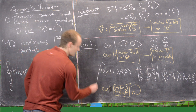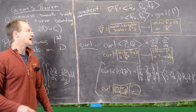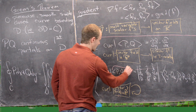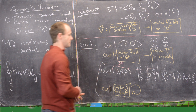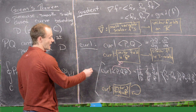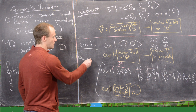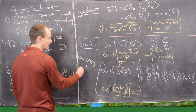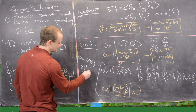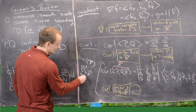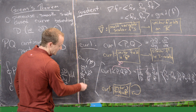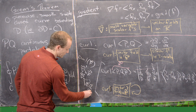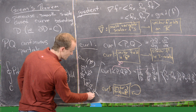The curl in R3 is often written as del cross F, where del is the operator vector made up of partial derivatives ∂/∂x, ∂/∂y, ∂/∂z.